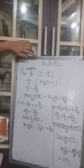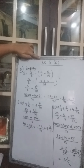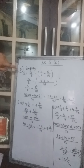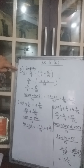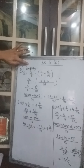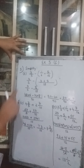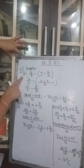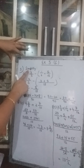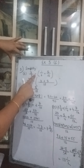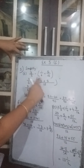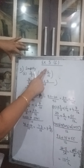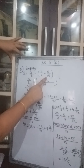Good morning students. We are in continuation of our exercise 5C and we are on the 5th question. The 5th question says we have to simplify 3 upon 5 minus, and in the bracket it is 1 upon 6 plus 5 upon 18.